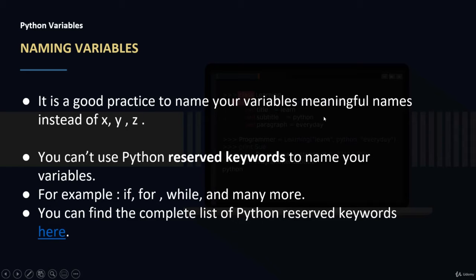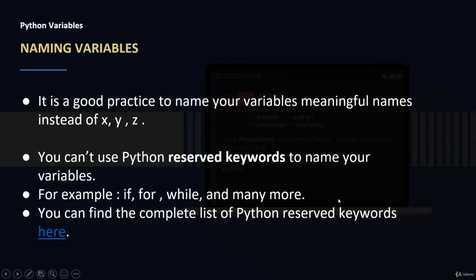Regarding naming variables, it's good practice to give them meaningful names instead of just x, y, and z. Spend some time thinking about a name that represents what the variable is doing. You also need to know that we cannot use reserved keywords to name variables — for example, we cannot name a variable 'for' or 'while'.